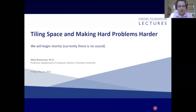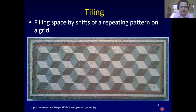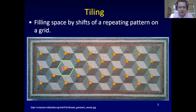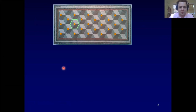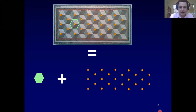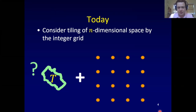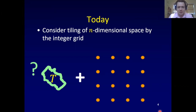Let's talk about tilings. A tiling is when you take a space and a pattern, like this hexagon, and you fill the space by shifting and repeating this pattern. So this mosaic is a tiling on a grid by hexagons. Today we'll talk about tilings in n-dimensional space — the pictures will be two or three-dimensional, but generally it's an n-dimensional question.